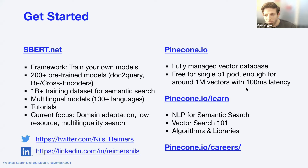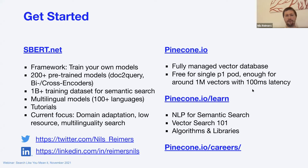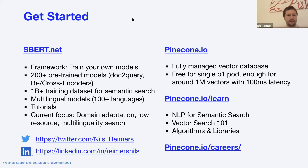Question from Christopher: how should one fine-tune a sentence embedding model to include domain-specific terminology, for example niche medical concepts? Niels: this is exactly the work my PhD student Kexing Wang is working on — it's still a big open question. We hope that the GPL technology, where you generate training data synthetically, can help incorporate domain-specific terminology, but it's not the final solution. Several PhDs will likely be written on this topic before it's solved — it's ongoing work.